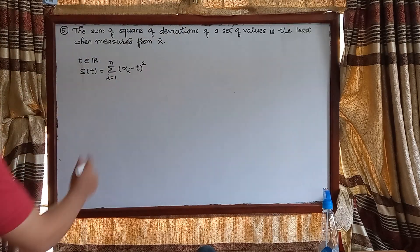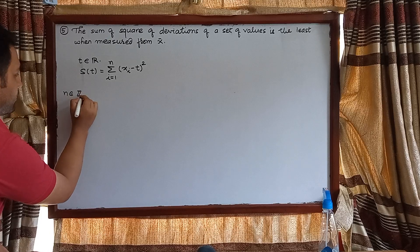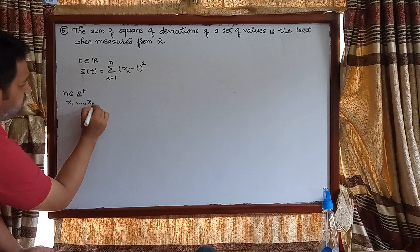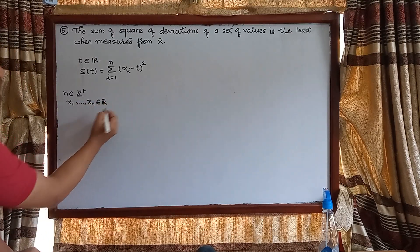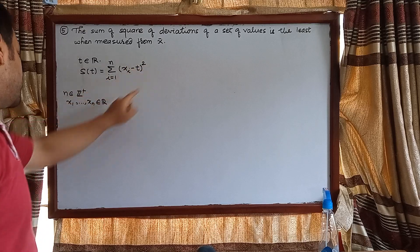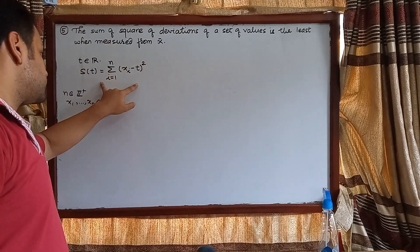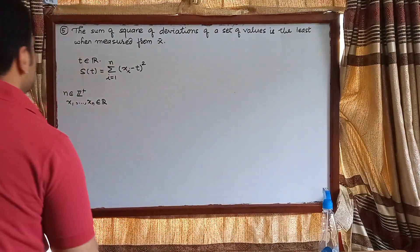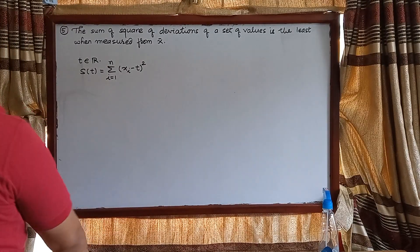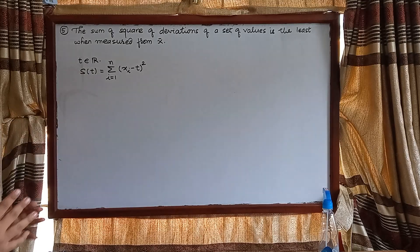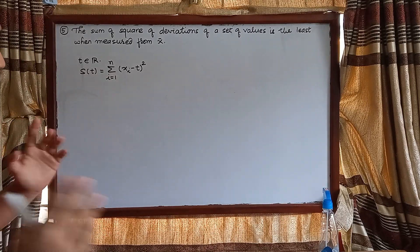Here n belongs to the positive integers, and x₁, x₂, … are the set of given observations belonging to the reals. We need to show that when t equals x̄, the mean of the observations, the value of S(t) is minimum. To prove this we're going to use the method of calculus — specifically the principle of maxima and minima from differential calculus.